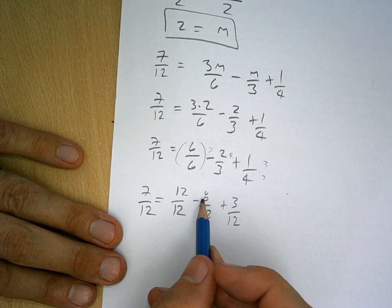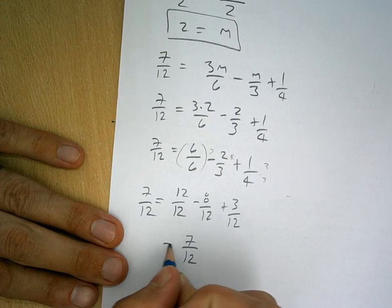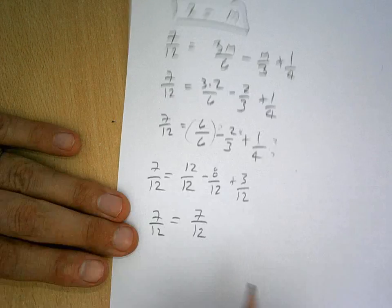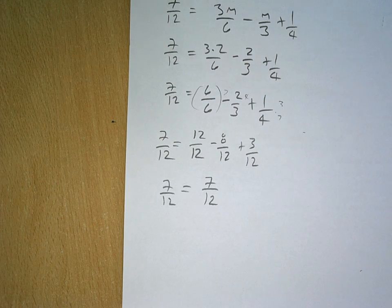So I have 12 minus 8, which is 4, and 4 plus 3, which is 7/12. And we see 7/12 equals 7/12 over here. Hope you enjoyed.